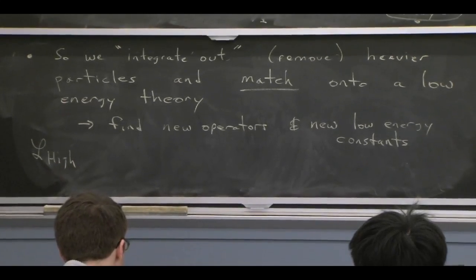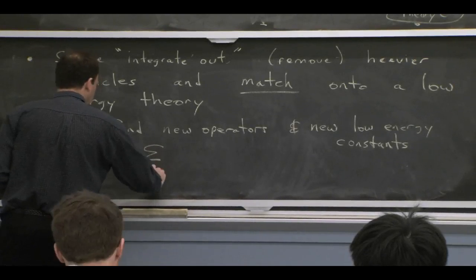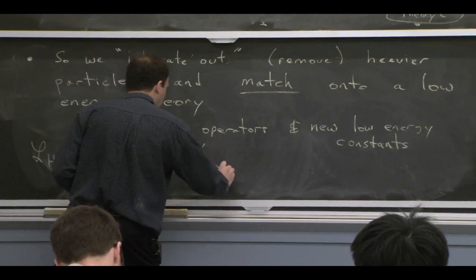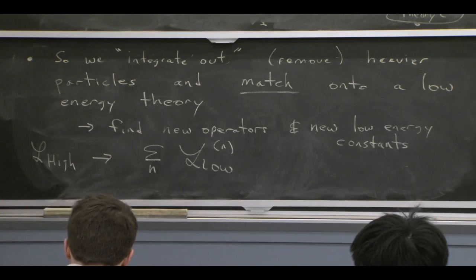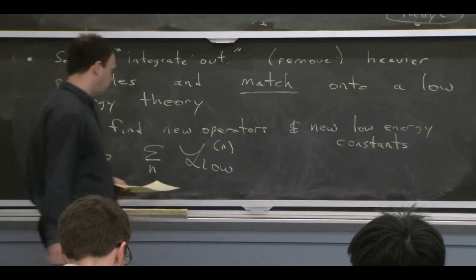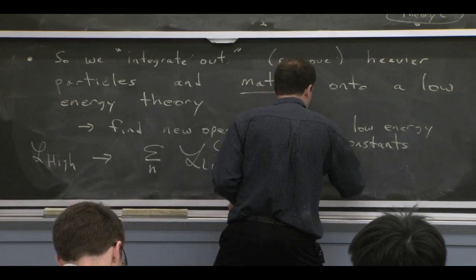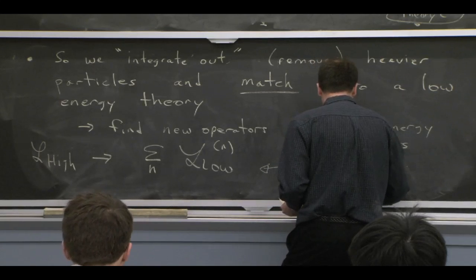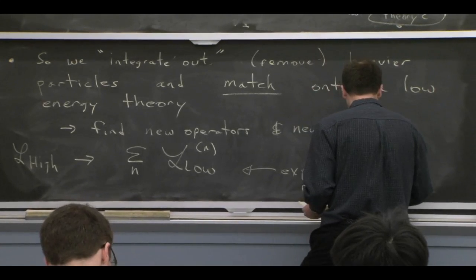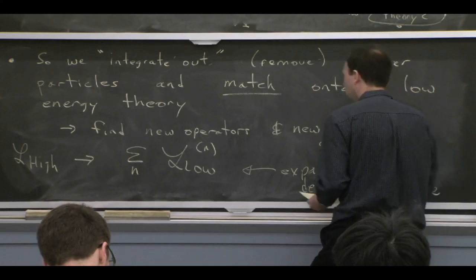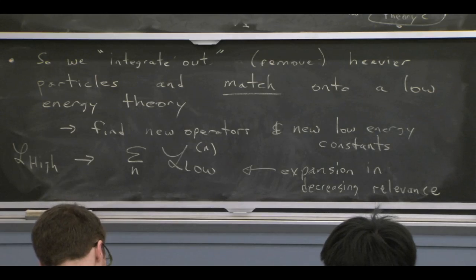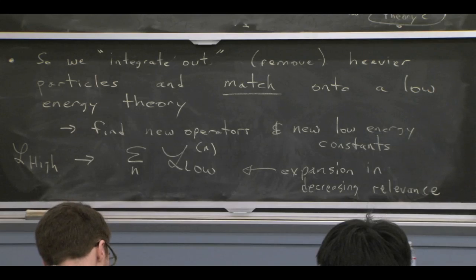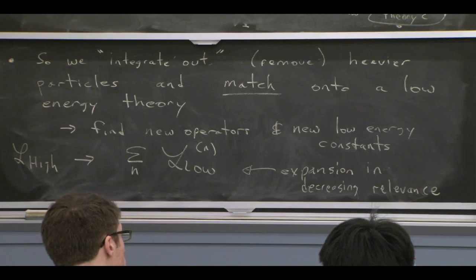Schematically, we start with some high energy Lagrangian and go over to some low energy Lagrangian, which is an infinite series indexed by n, where that index denotes higher-order terms of decreasing relevance in whatever expansion we're doing. So it's an expansion in decreasing relevance of the kept terms. In this situation, the two theories are in some sense describing common things.